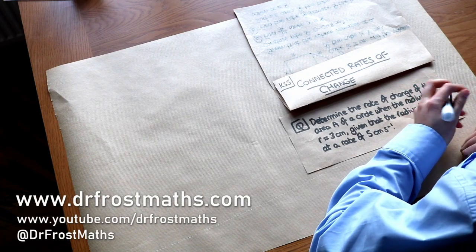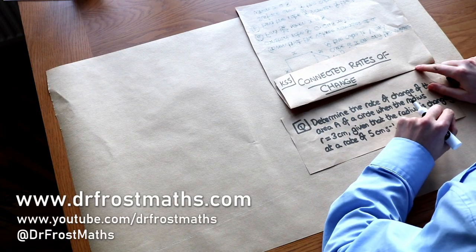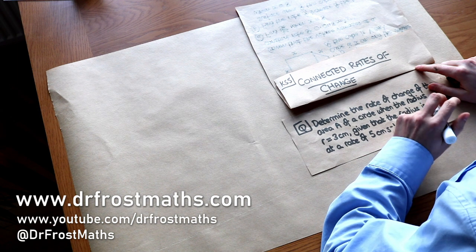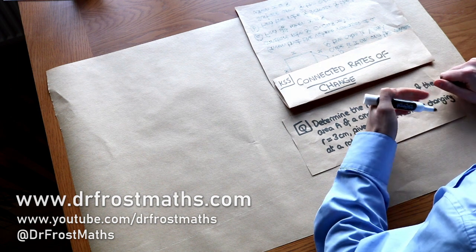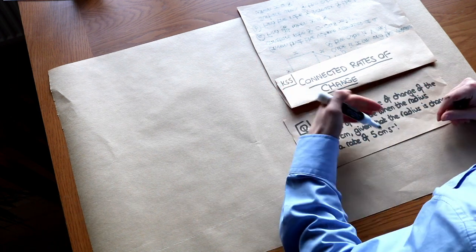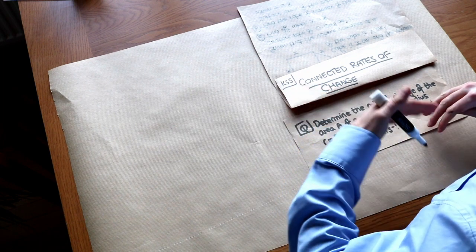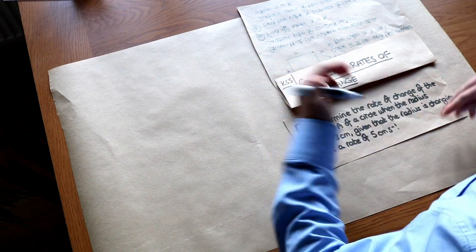Hello and welcome to this Dr. Frost Maths video on Key Stage 5, Connected Rates of Change. What I mean by connected rates of change is to relate rates of change involving different variables. It might be a mixture of volume and area and time, for example.